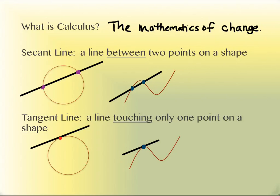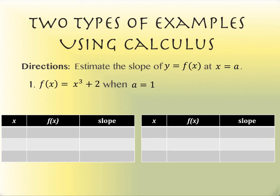So that right there would be a tangent line. Now we're going to do some estimation, and that's what you're going to need a calculator for. The first thing we're going to do is two different types of examples using calculus. The first one is estimating the slope of a curve at a point. So if you've got your calculator, go ahead and grab that. Inside of your y-equals menu, write this function: our function is going to be x cubed plus 2. So in y1, you should have written x cubed plus 2.